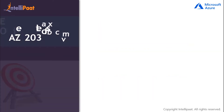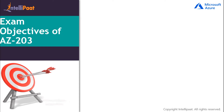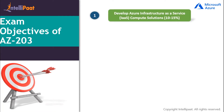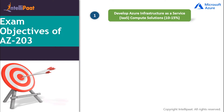Now let's discuss the exam objectives. Due to constant feedbacks about the exam being difficult, Microsoft has divided the entire exam into six modules to ease exam preparation. The first module is Developing Azure Infrastructure-as-a-Service Compute Solutions, with a weightage of 10 to 15 percent. You need to be thoroughly prepared with creating containerized solutions, implementing batch jobs using Azure Batch Services, and implementing solutions that use virtual machines.